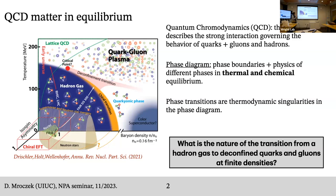The first definition is QCD, which describes interactions governing between quarks and gluons. I'm sure you're familiar with this depiction of the QCD phase diagram. What this pictures is phase boundaries — transitions between a hadron gas or a plasma phase. These are phases assumed to be in thermal and chemical equilibrium. Phase transitions are thermodynamic singularities in the phase diagram. So we're looking at different phases, the relevant degrees of freedom, and the singularities on the phase diagram.